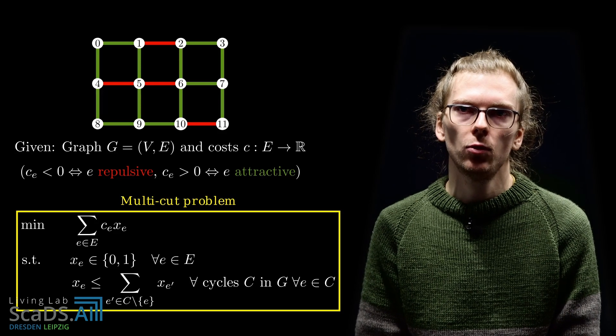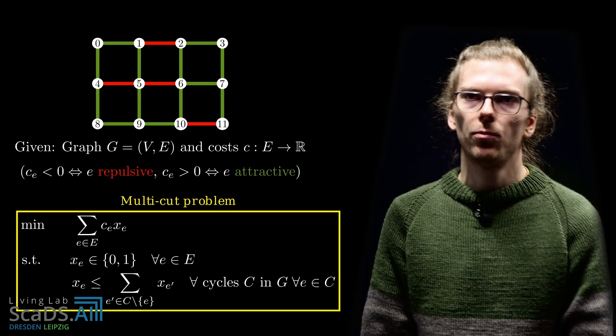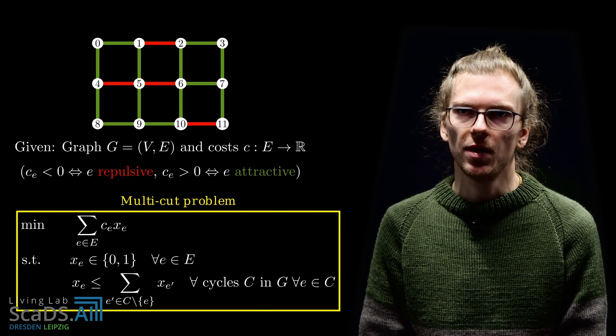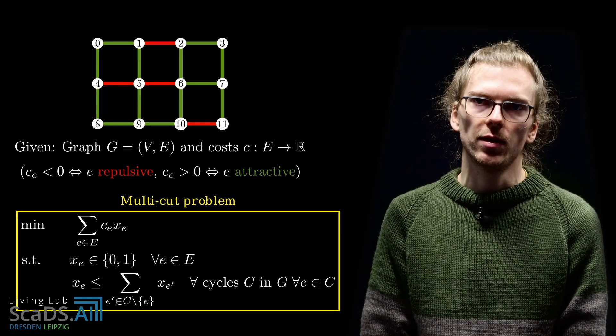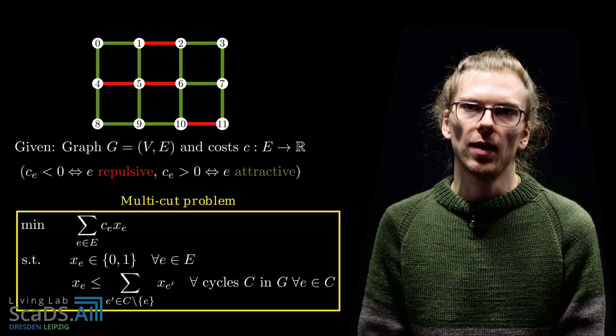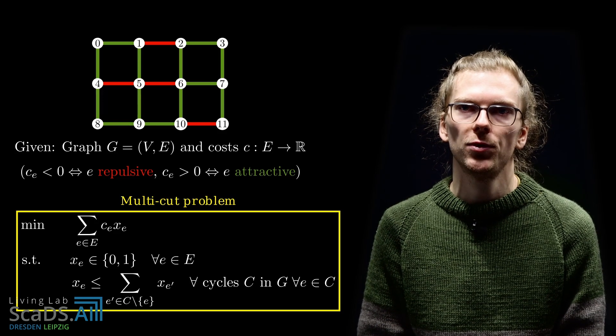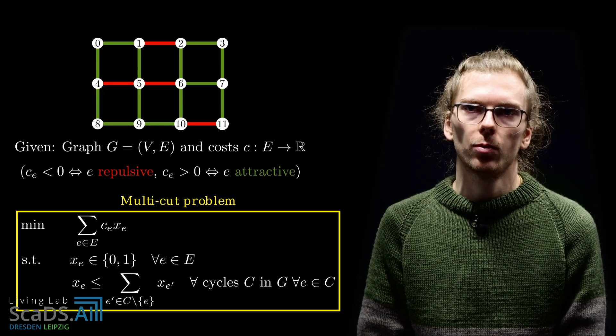Next, we will see two algorithms for solving this problem. The multi-cut problem, as it is stated here, is a so-called integer linear program. We can find the optimal solution of the multi-cut problem by plugging this formulation into a general purpose solver for integer linear programs.